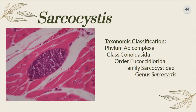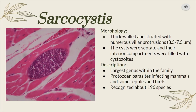Sarcocystis are found under the family Sarcocystidae. Sarcocystis are generally thick-walled and striated with numerous villar protrusions. The cysts were septate and their interior compartments were filled with cystocytes. With 196 species currently, these parasites are known to infect mammals and some reptiles and birds.